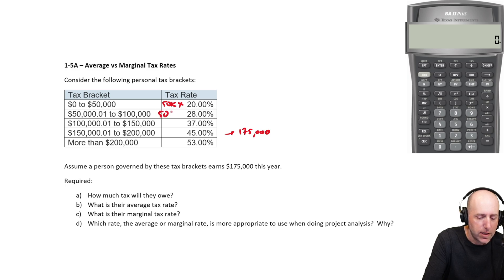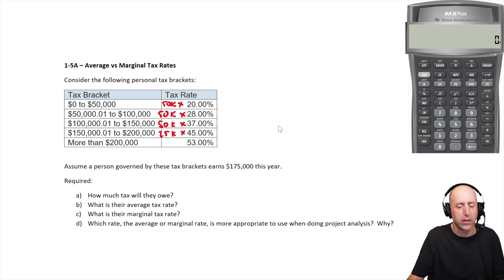It's $50,000 at 28%. It's $50,000 at 37%. And then, to get to $175,000, it's our last 25,000 at 45%. So let's do some math.